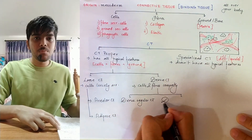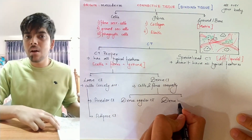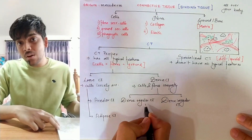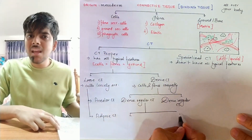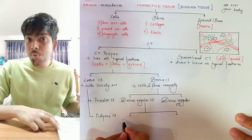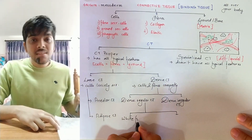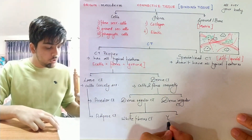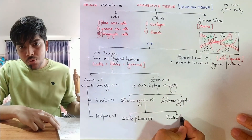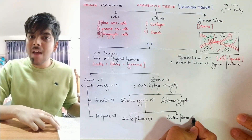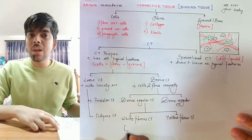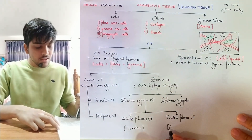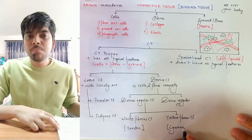In dense regular connective tissue, the fibers are arranged in a regular fashion — that's why it's called so. Under dense regular connective tissue we deal with two types: white fibrous connective tissue, named due to the presence of white fibers made up of collagen, and yellow fibrous connective tissue, named due to the presence of yellow fibers made up of elastin.